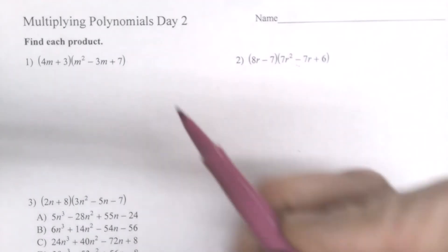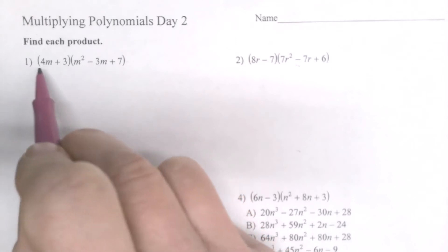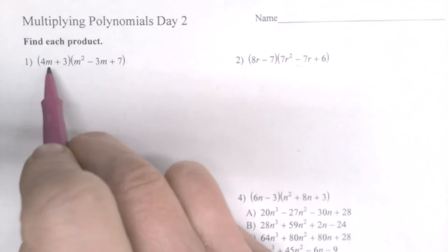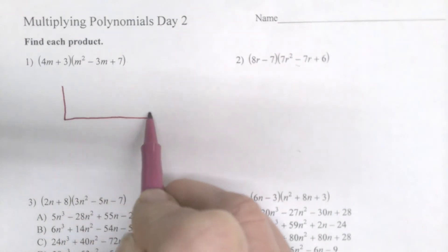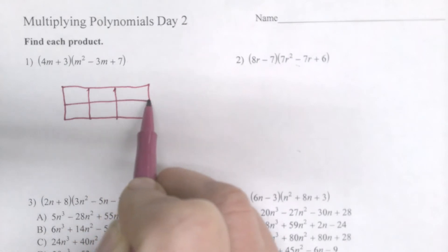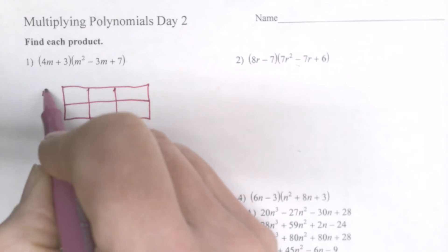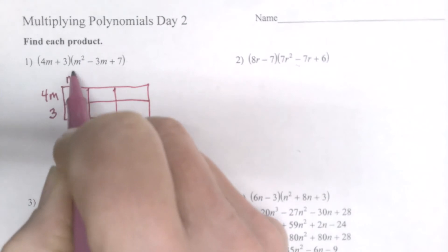And one option that I think works really well is to do the box method. And what I do is I will create a box that has the same sort of length and height or height and width, meaning I have two by three. So I'll create a box that has two by three boxes inside of it. And so the two, this will be 4m and 3. And then the three part, this would be m squared, negative 3m and 7.